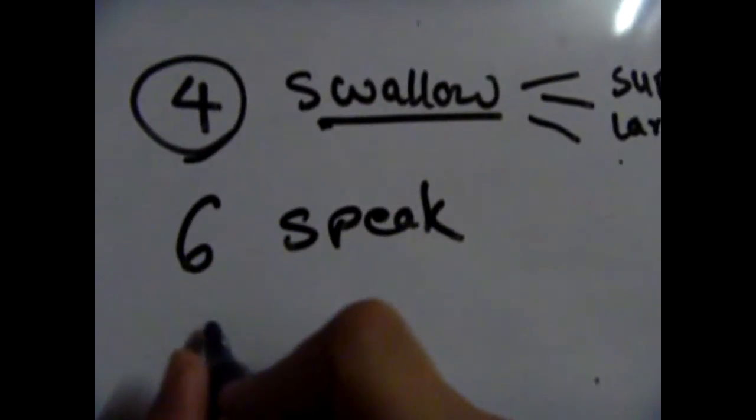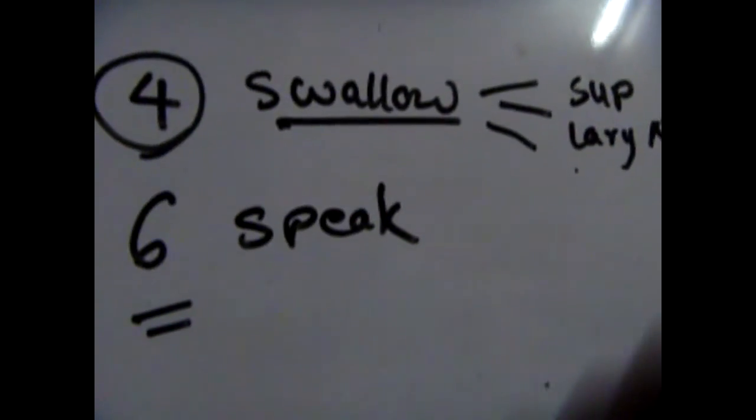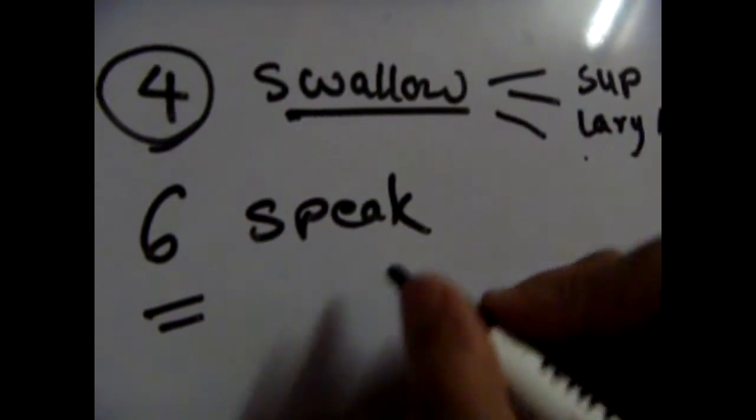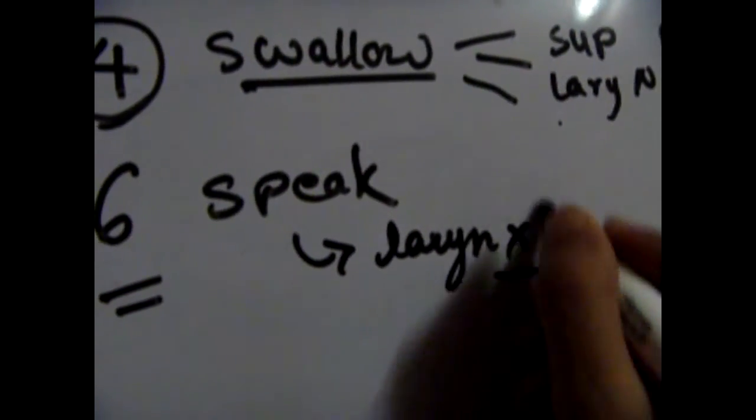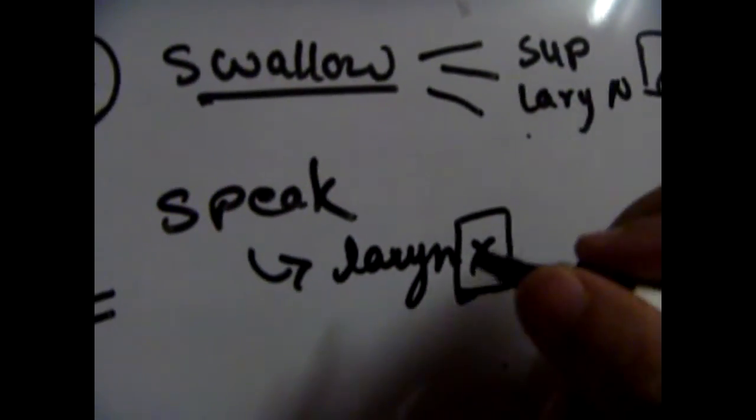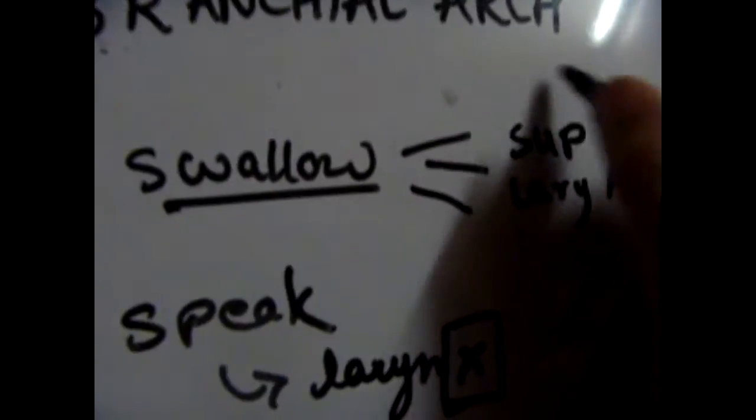The sixth is associated with speaking, so you're going to think of all the intrinsic muscles of the larynx. And the larynx has an X, so you can remember the X for the tenth cranial nerve.